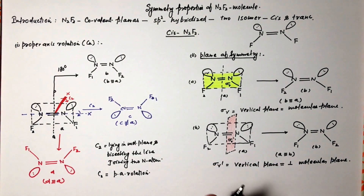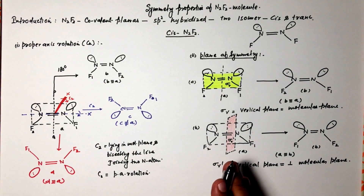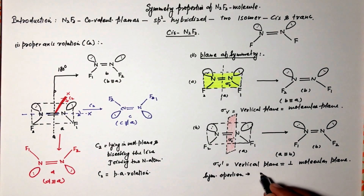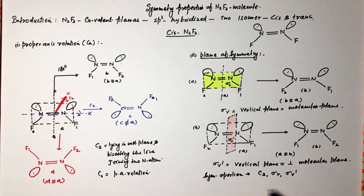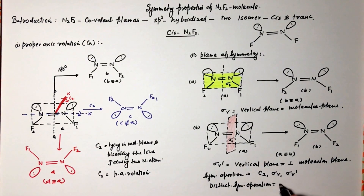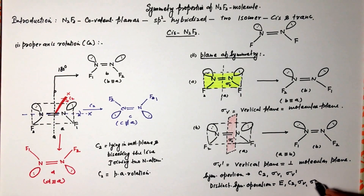The inversion center is not present in this molecule. This molecule will have one more symmetry operation, which is its own identity operation E. So the total distinct symmetry operations in this molecule are: E (identity), C2, sigma v, and sigma v-prime. The total order of symmetry is 4.